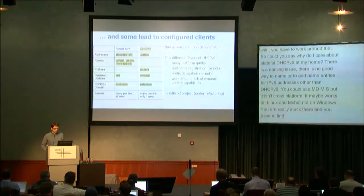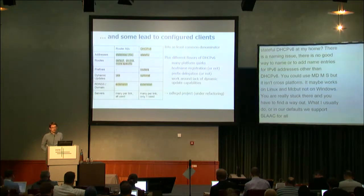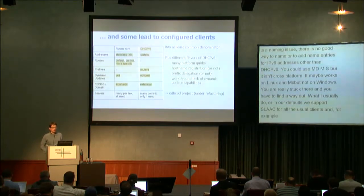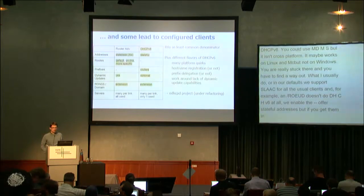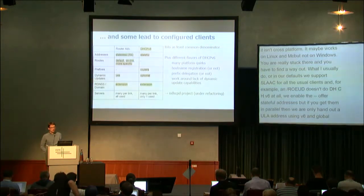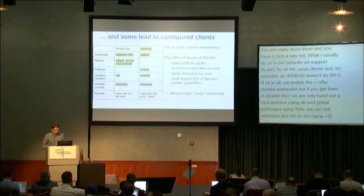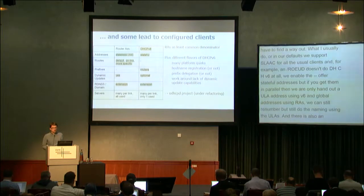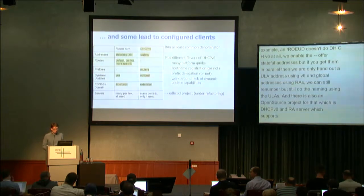What we do in our defaults is we support SLAAC for all the usual clients. Android doesn't do DHCPv6 at all, but at the same time we enable the managed flag and also offer stateful addresses. If you get stateful addresses in parallel, we only hand out a ULA address using DHCPv6 and global addresses using RAs. So we can still renumber the global addresses but can still do naming using the ULAs. There's also an open source project called ODHCPD — a DHCPv6 and RA server which supports reconfiguration and PD.